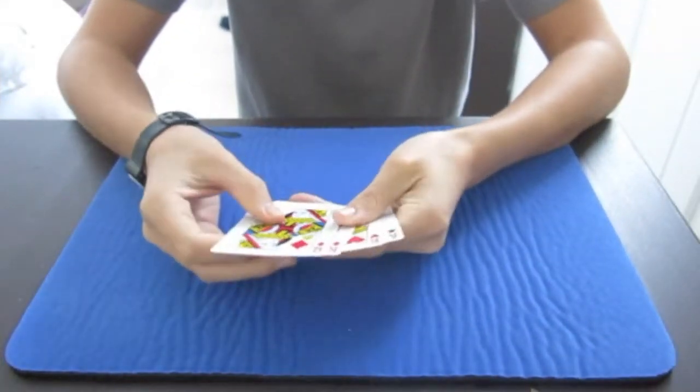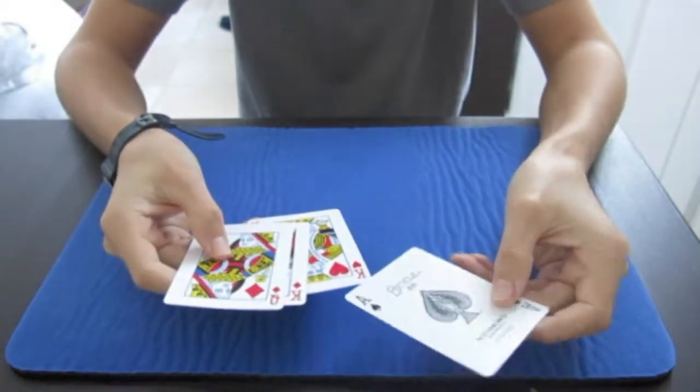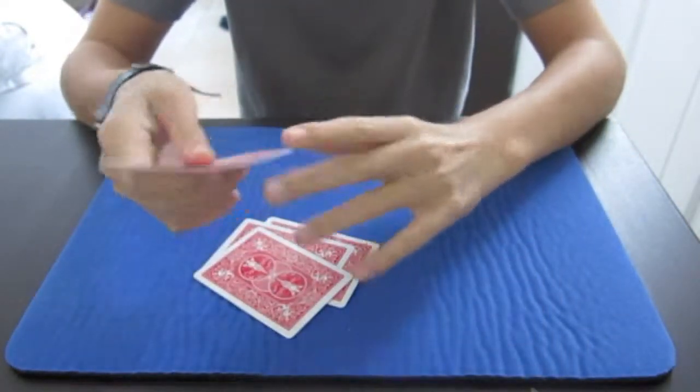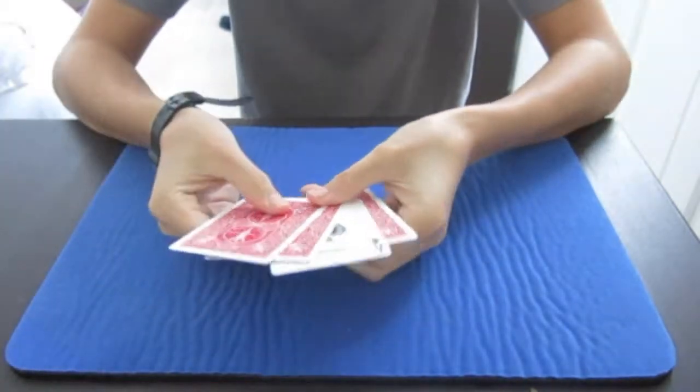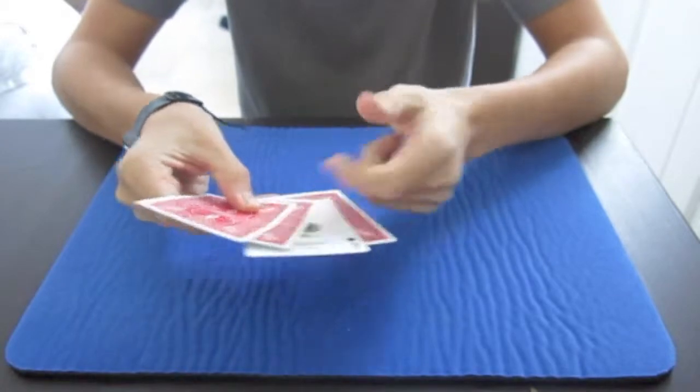So first I'm going to show you what it looks like. Look, I'm going to take the Ace, put it upside down so you can see it. Down, up, down, down.